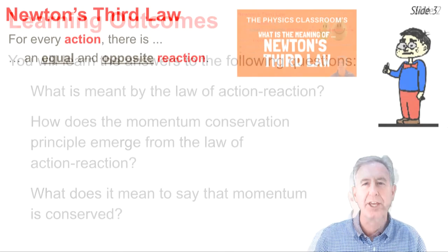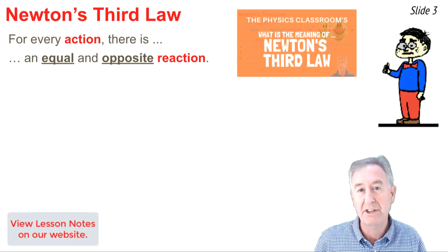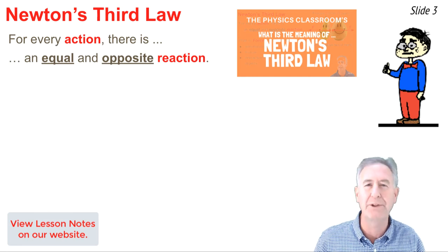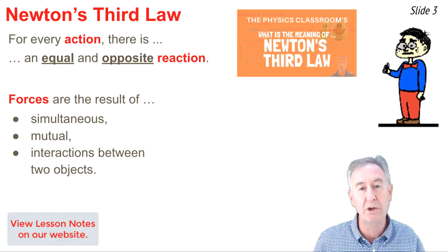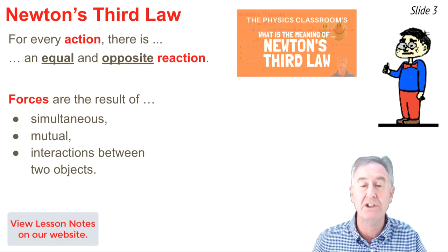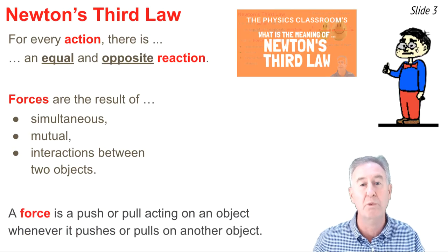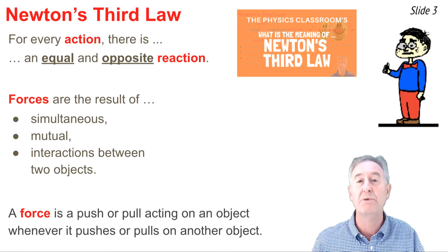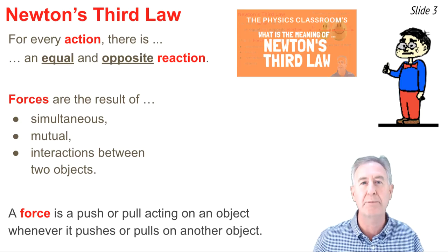In a previous video, we discussed Newton's third law, which states that for every action, there's an equal and opposite reaction. The law explains that forces are the result of a mutual and simultaneous interaction between two objects. It essentially defines what a force is — a push or a pull exerted on an object whenever that object interacts with any other object in its surroundings. It should probably be called the interaction force-pair law, because the law explains that forces always come in pairs.